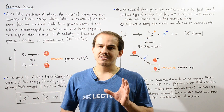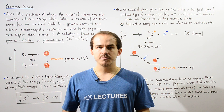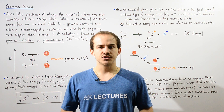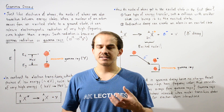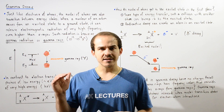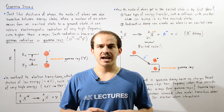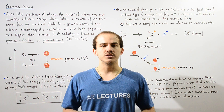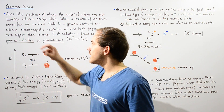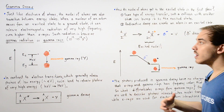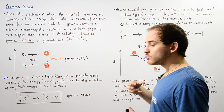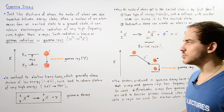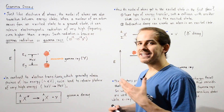Just like electrons can transition between energy states inside an atom, the actual nucleus of that atom can also transition between different energy states. When the nucleus of an atom transitions from a higher energy excited state to a lower energy ground state, it usually releases electromagnetic radiation with very high frequency values, sometimes even much higher than x-rays. This electromagnetic radiation released when nuclei of atoms transition between energy states is known as gamma radiation or gamma rays.